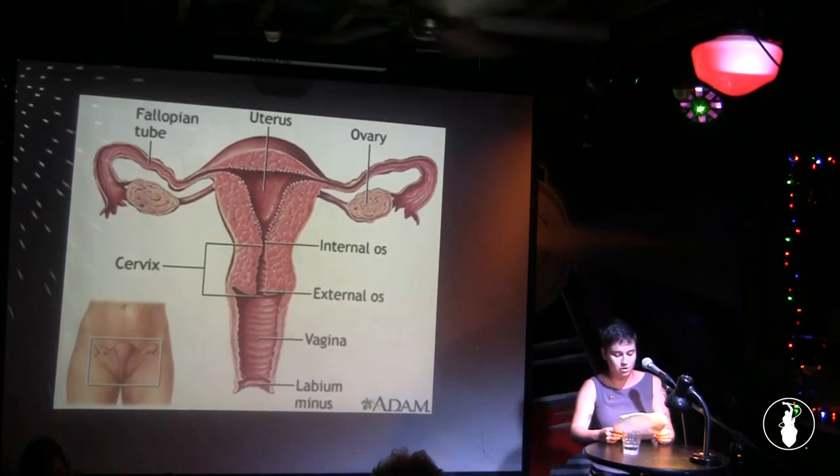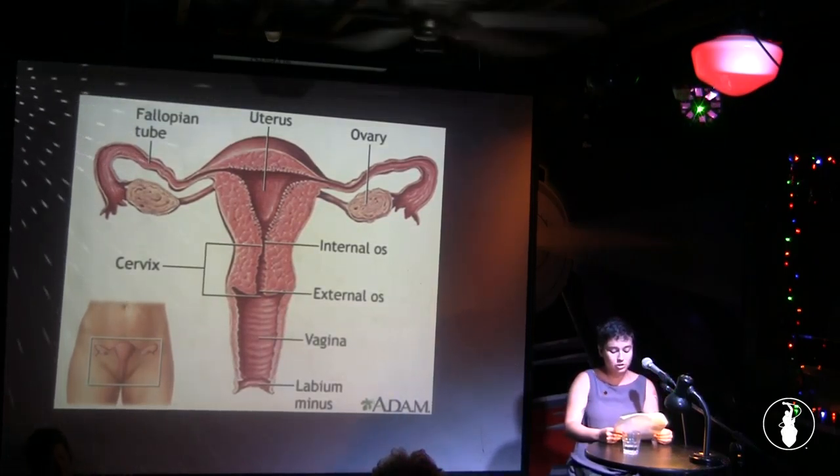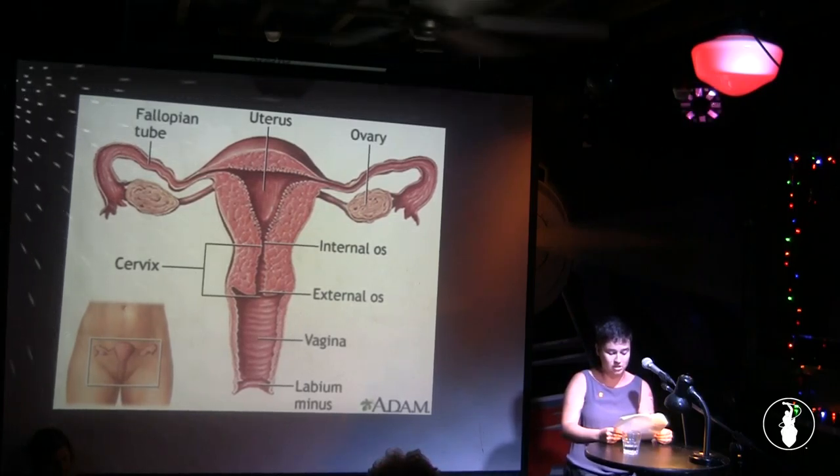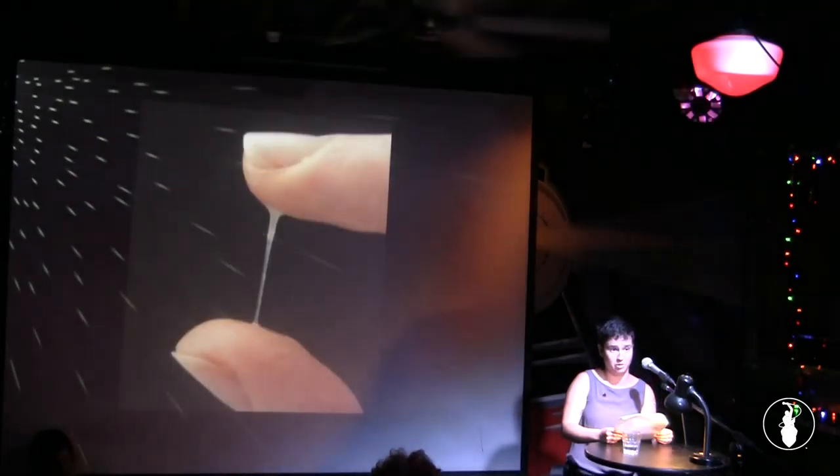The uterus, ovaries, and fallopian tubes comprise the upper region. So, in order to get to the uterus, however, you have to go through the cervix, which is a tiny opening full of cervical mucus.